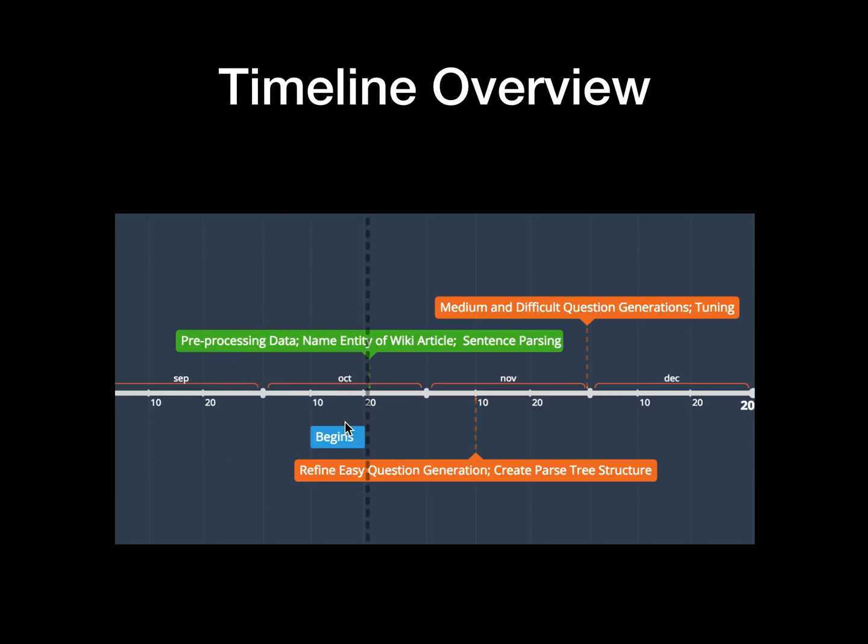What we have done thus far is pre-processing data, getting the name entity of the Wikipedia article, and sentence parsing using NLTK.